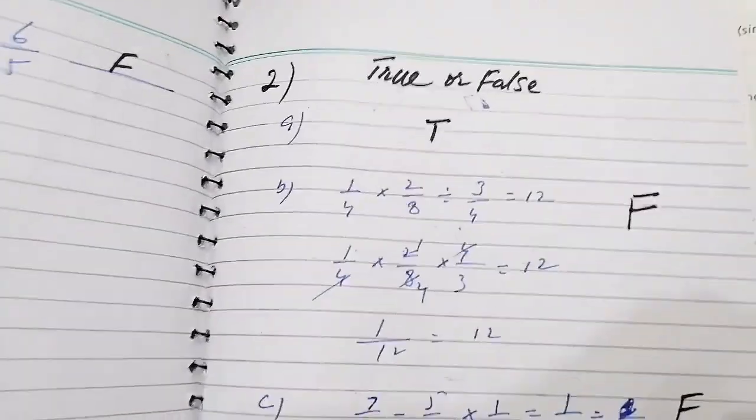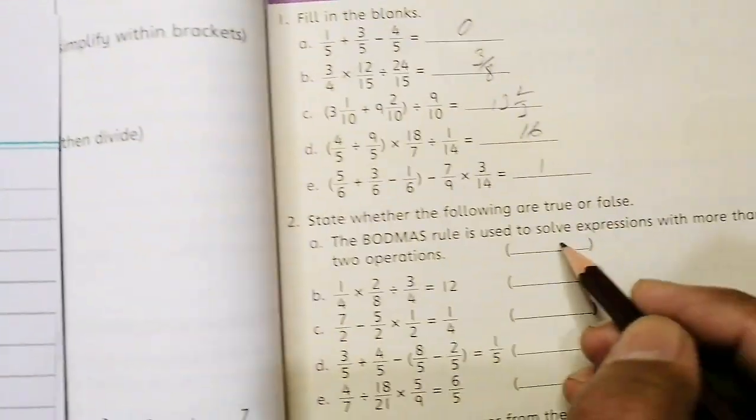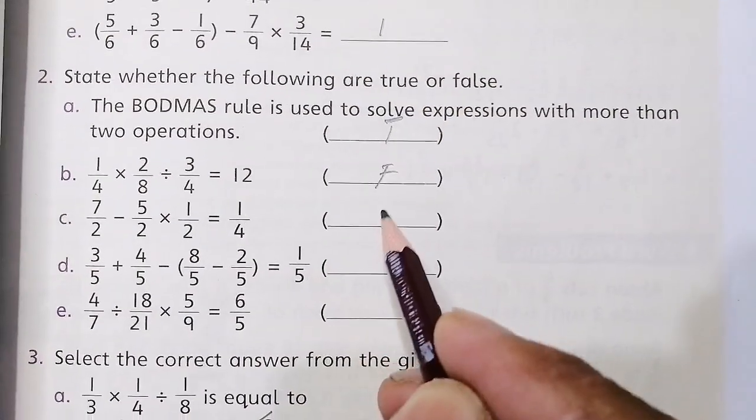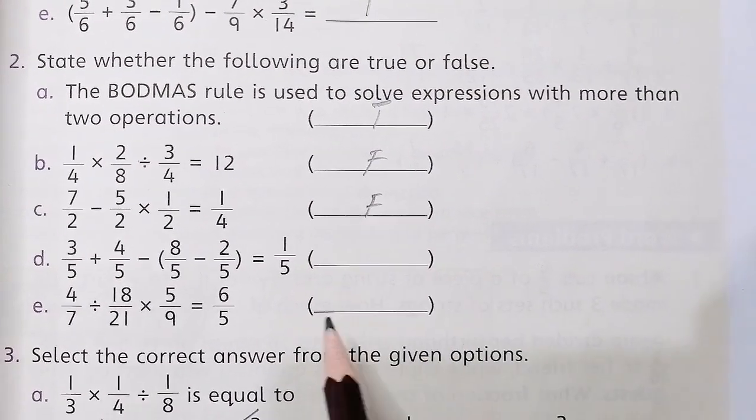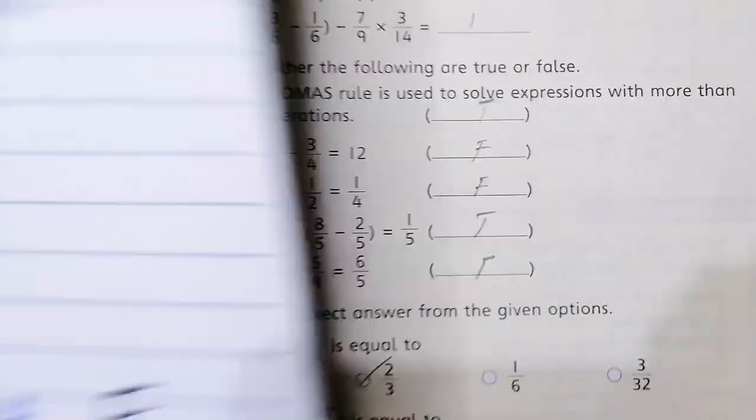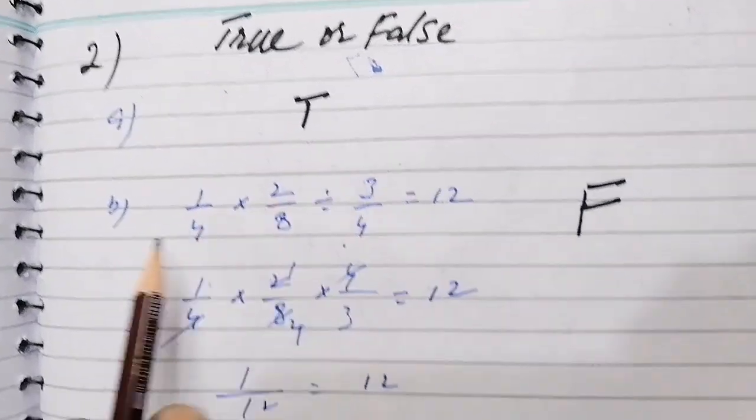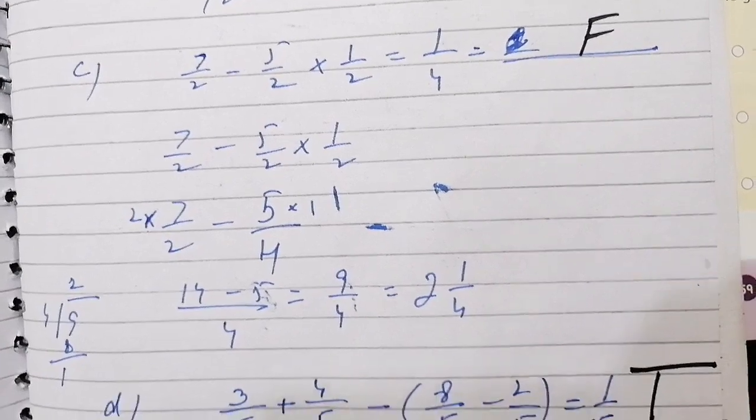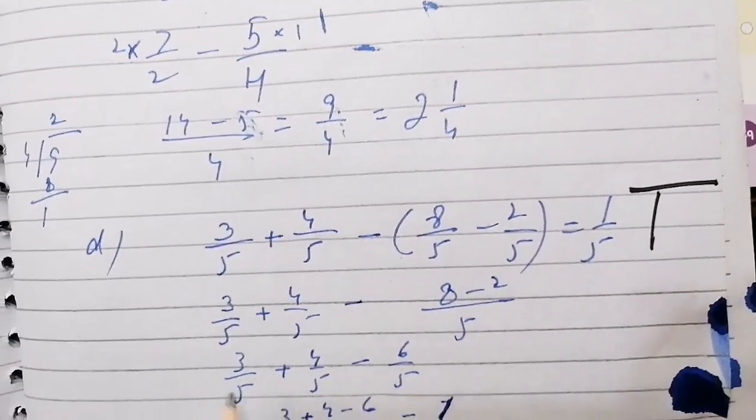A part is true, then B part is false, then again false, then true, and then last one is false. You can look at this - I have solved A part, B part, C part, and then you can tell whether it is true or false. B part and this is E part.